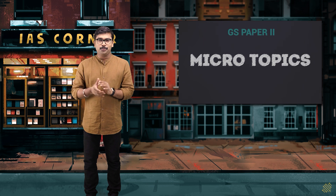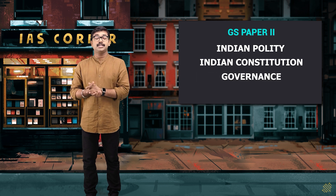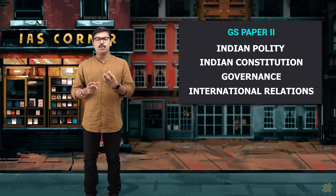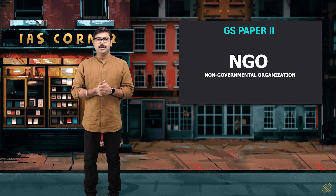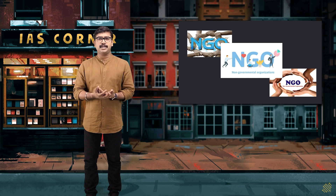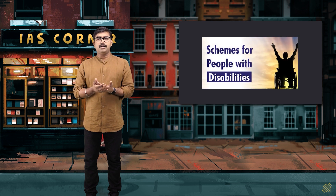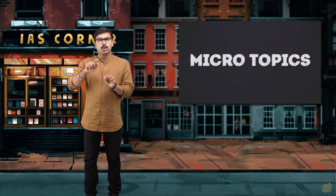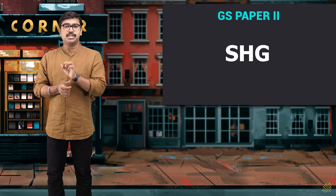Next is GS Paper 2. When you hear GS Paper 2, Indian polity, Indian constitution, governance, and international relations are the major pillars. But the micro topics we really need to stress include the role of NGOs — non-governmental organizations. There are so many NGOs across this country working for the general upliftment of different strata of society: NGOs for women, for children, for differently-abled people.